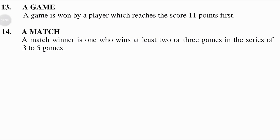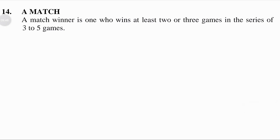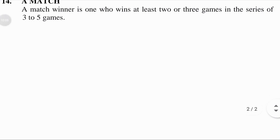A match is played best of three or best of five games. For each game, the first player to reach 11 points wins that game. A match winner is the one who wins at least two out of three, or three out of five games. In table tennis, a winner of a match is the player who wins three games out of five. Thanks and have a nice day.